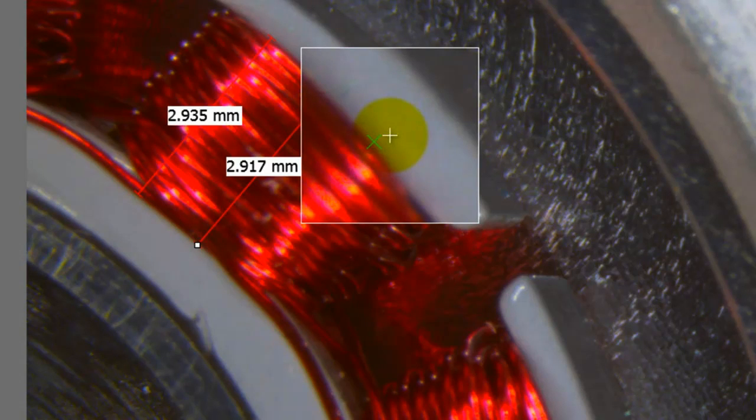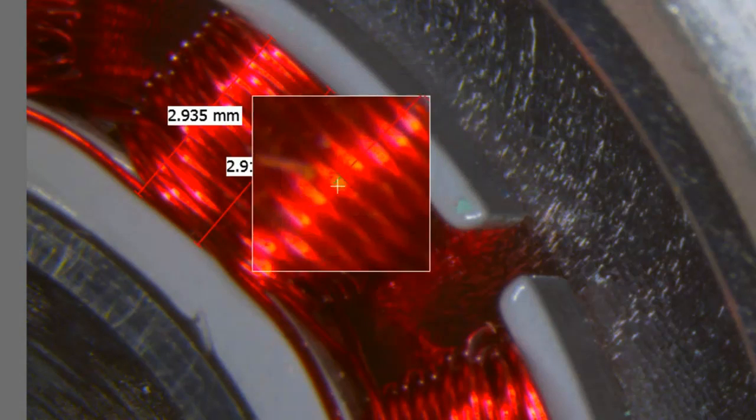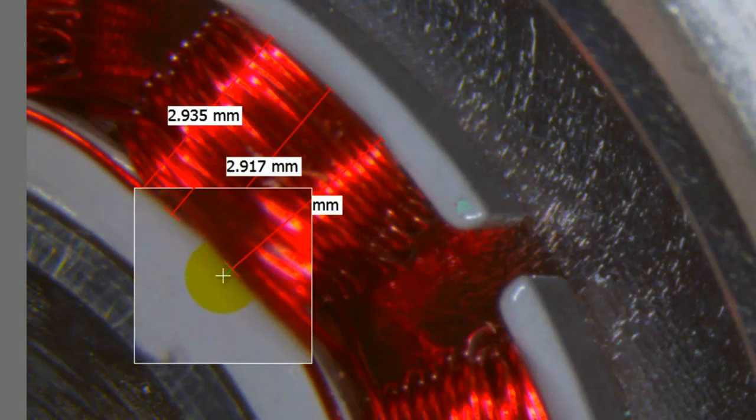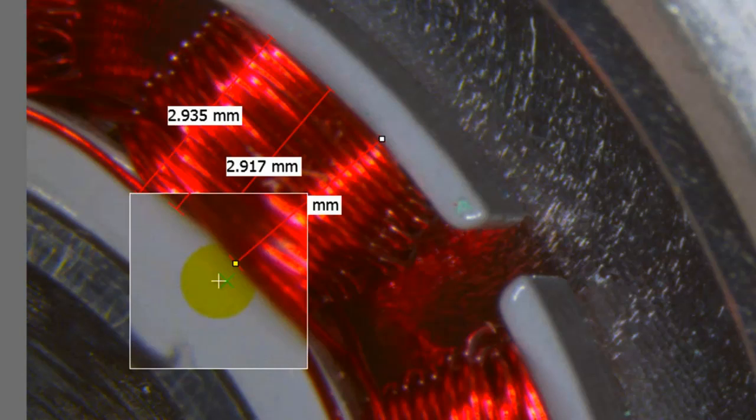I then click to start the first edge, move to the second side, and again you can see that the green cursor and the length of the line is snapping to the edge of the coil. I now simply have to click again, and that positions the line.